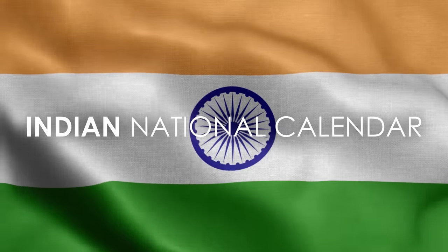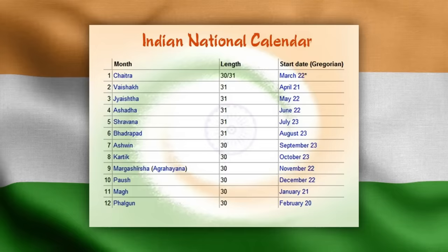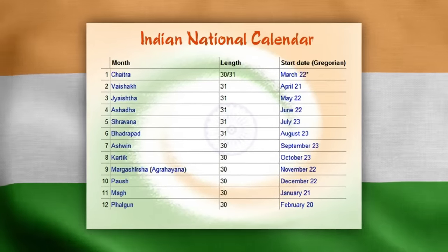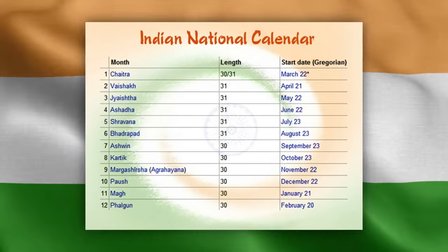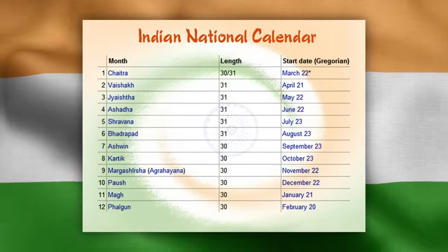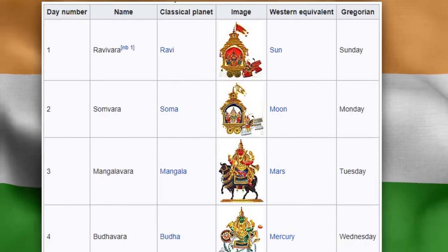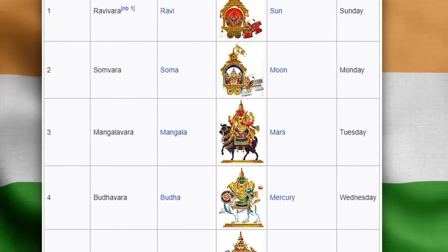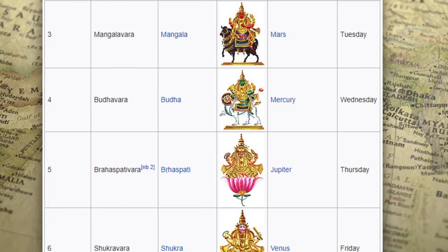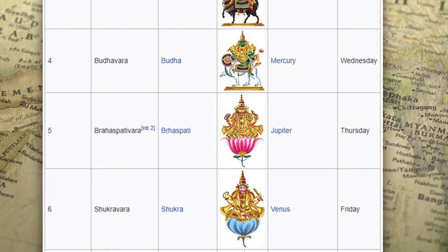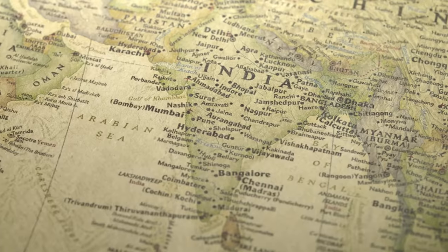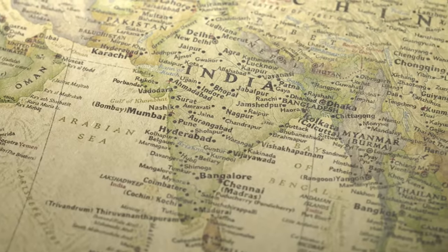First, the Indian national calendar — also called Shaka Samvat — is a solar calendar that is 78 years behind the Gregorian calendar. They have 12 months which follow the signs of the tropical zodiac, and their weeks also have seven days, each named after a celestial body. Starting on Sunday it goes: Sun, Moon, Mars, Mercury, Jupiter, Venus, and Saturn. It seems all calendars end up being very similar in days and months per year, just desynchronized from each other regarding when each month starts.